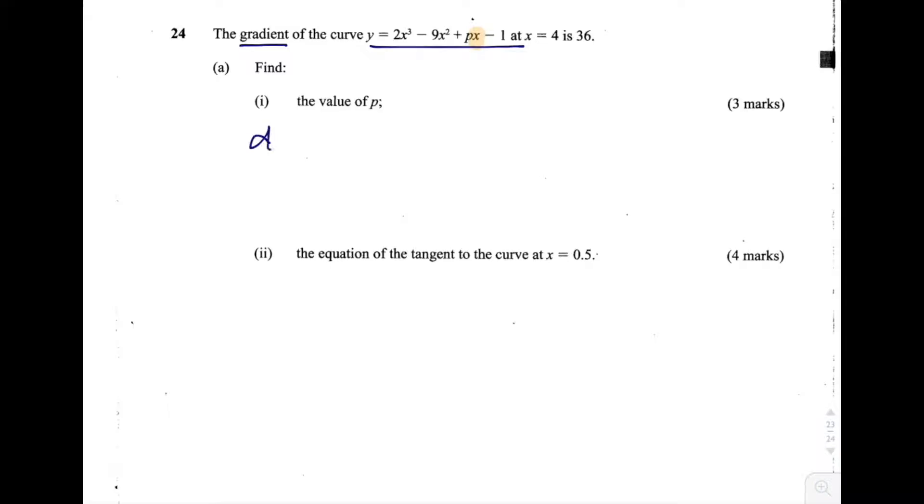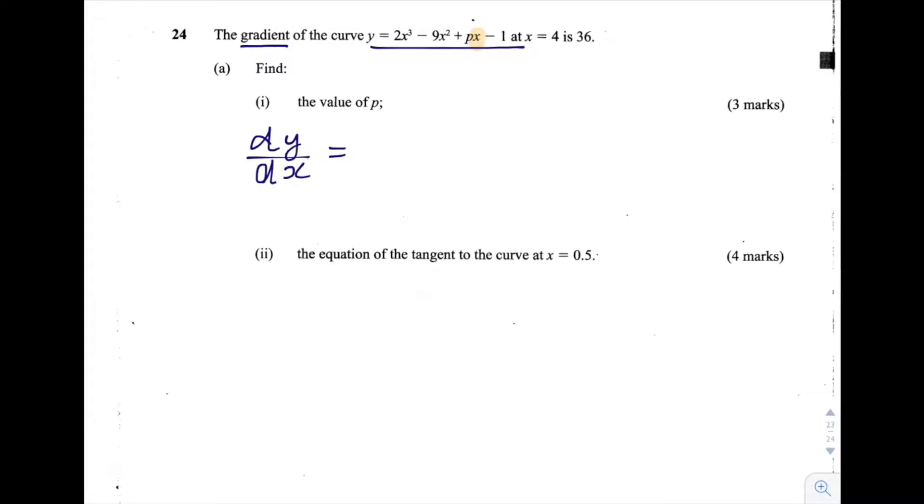So that would be dy by dx. Remember when we differentiate, we decrease the exponent by 1 and we multiply that old exponent by the coefficient in front of the x term. So 2x cubed becomes 2 times by 3, that's 6x squared.